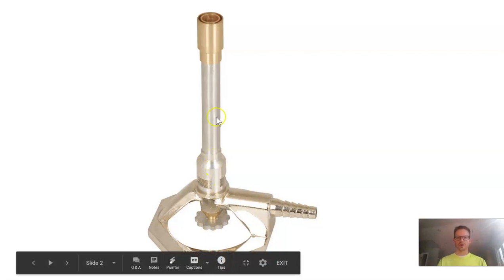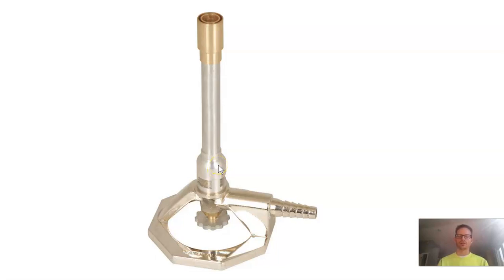What we're going to use to control our gas is this. So this whole cylinder spins, right? And so what we want to do is we want to screw it down and we want to make it tight before we start or we try to start our Bunsen burner.